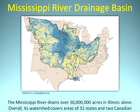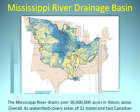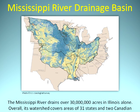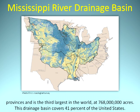The Mississippi River drains over 30 million acres in Illinois alone. Overall, its watershed covers areas of 31 states and 2 Canadian provinces and is the third largest in the world at 768 million acres. This drainage basin covers 41% of the United States.